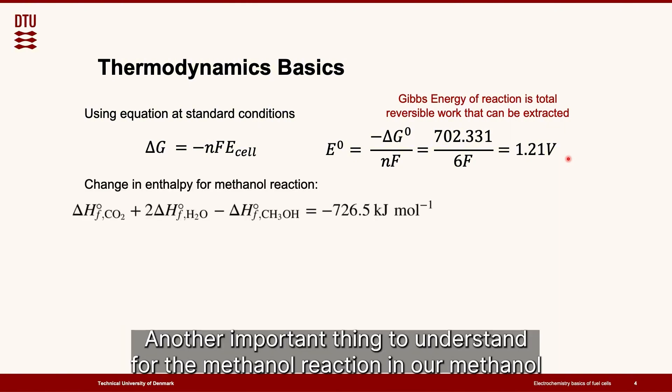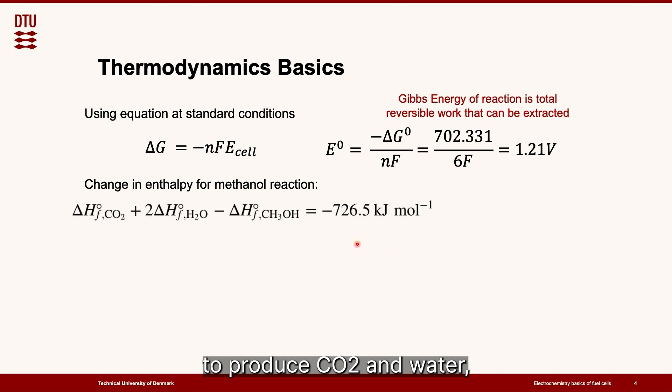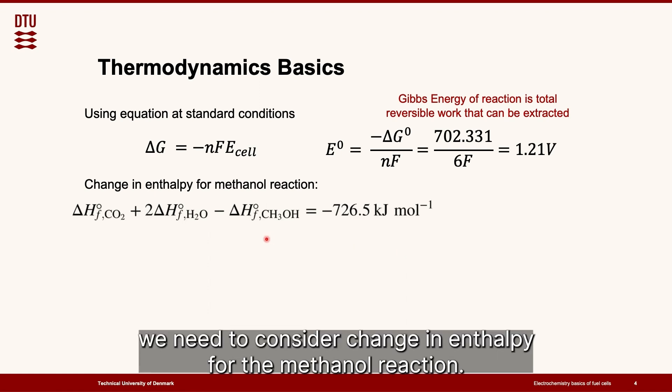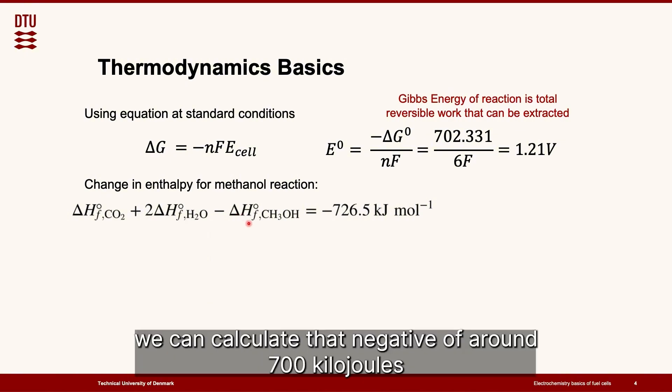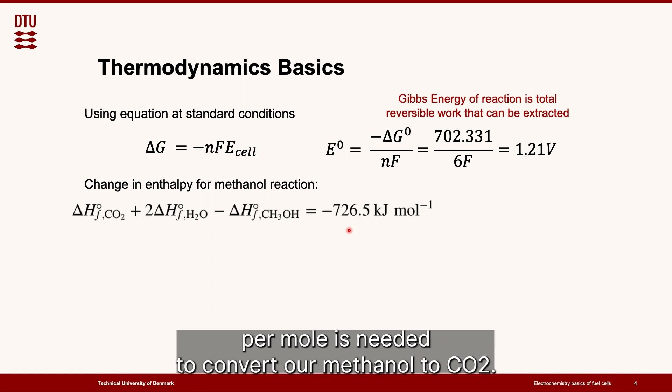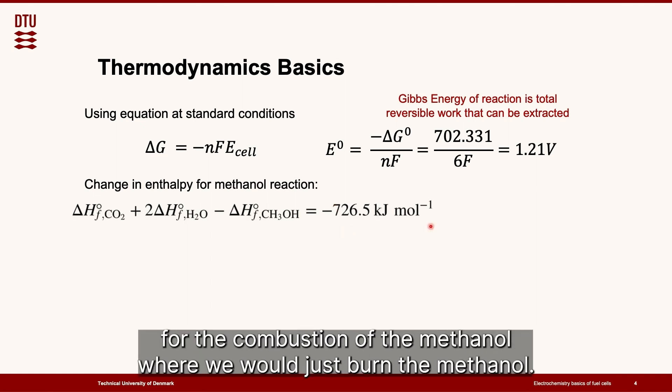Another important thing to understand for the methanol reaction in our methanol fuel cell system, where we use methanol and oxygen to produce CO2 and water, we need to consider change in enthalpy for the methanol reaction. By finding the standard values available in the standard tables, we can calculate that negative of around 700 kJ per mole is needed to convert our methanol to CO2, and that's exactly the amount of energy that is needed for the combustion of the methanol, where we would just burn the methanol.